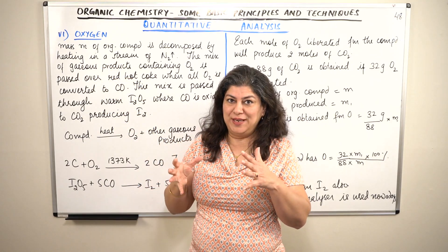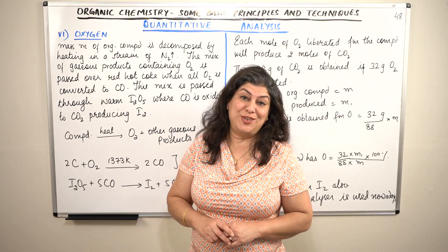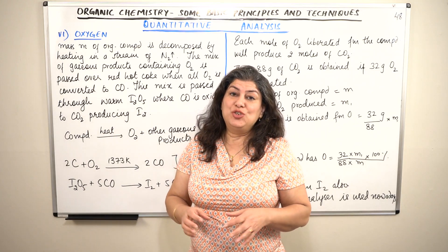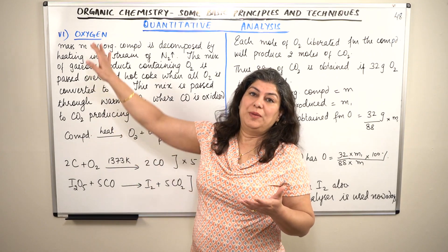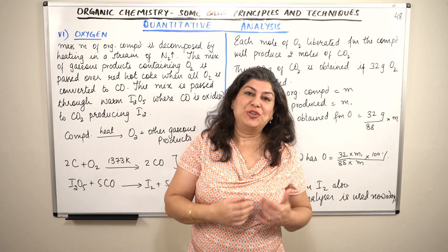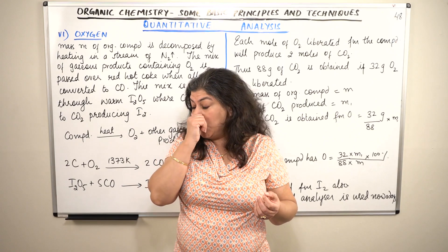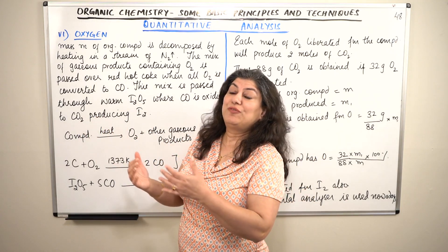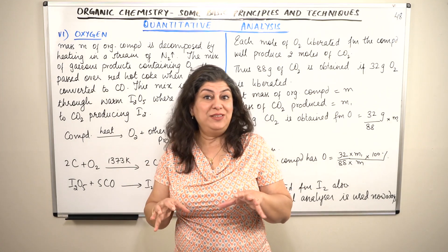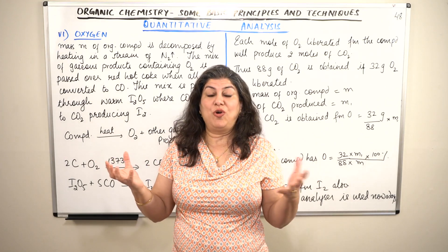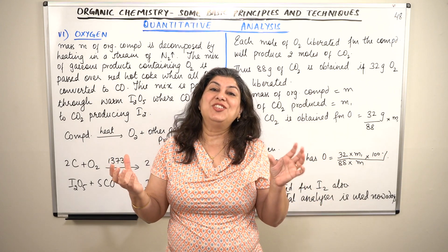If you remember, when we did the qualitative analysis, we did not have a test for oxygen. We tested all the other elements. The reason we did not test for oxygen is that oxygen in an organic compound would be present in functional groups — like the alcoholic group, esters, and carboxylic acids. When you carry out the test for the functional group, you would know whether oxygen is present or not.